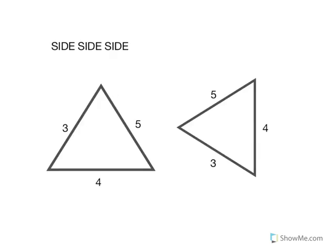Two triangles are congruent if three sides of one triangle are equal to three sides of the other triangle. So for this triangle, we have a five and a five, then there is a four in the same position of the other triangle where there is a four, then there is a three on the other side. Though one triangle is turned, they have three equal sides in the same positions, thus meaning it is congruent by side-side-side.